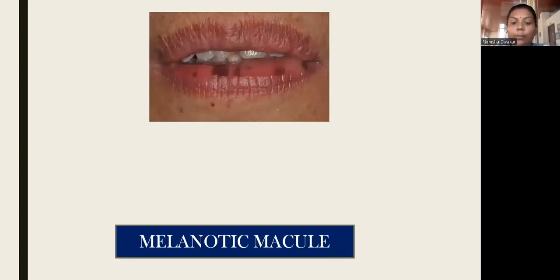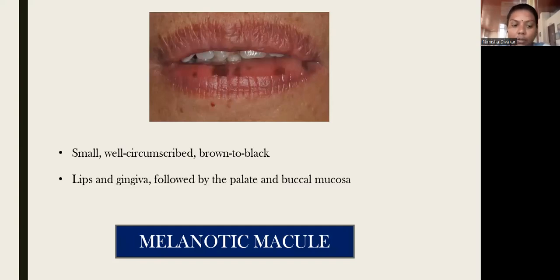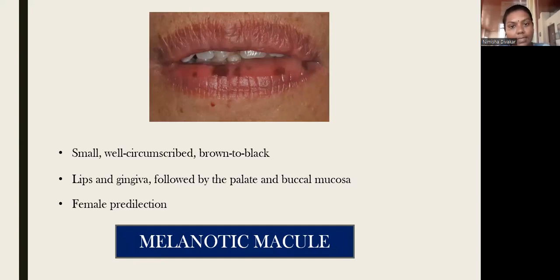But there will not be any increase in the number of melanocytes. Next is melanotic macule. These are all benign pigmentations. Melanotic macule is a small, well-circumscribed, brown to black pigmented area. It commonly occurs in most people and commonly occurs on the lips and gingiva, followed by the palate and buccal mucosa. Melanotic macule has a female predilection with a red lip predilection.